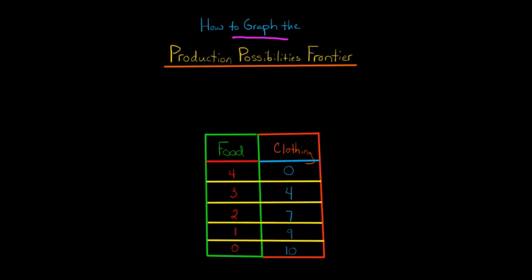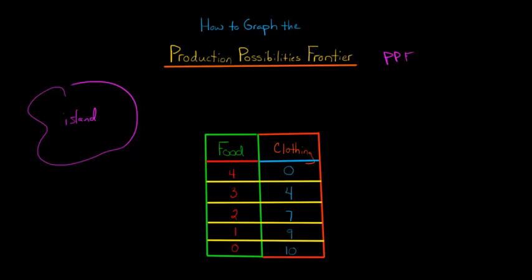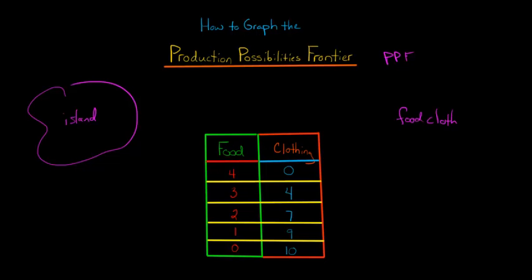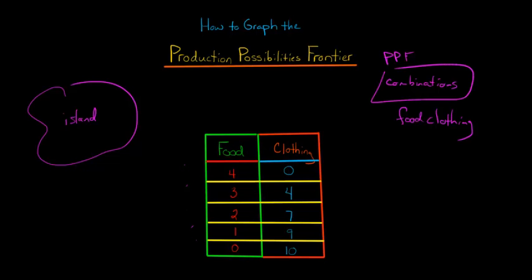In this video, we're going to discuss how to graph the Production Possibilities Frontier, also known as the PPF. Let's say that you and a group of friends are stranded on a deserted island after a plane crash, and you have to make decisions about how much food to collect and how much clothing to produce. You can have a number of different combinations: four units of food and zero units of clothing, three units of food and four units of clothing, and so on. The PPF is just a graph of the different combinations of goods or services that could conceivably be produced — all the maximum combinations of food and clothing.